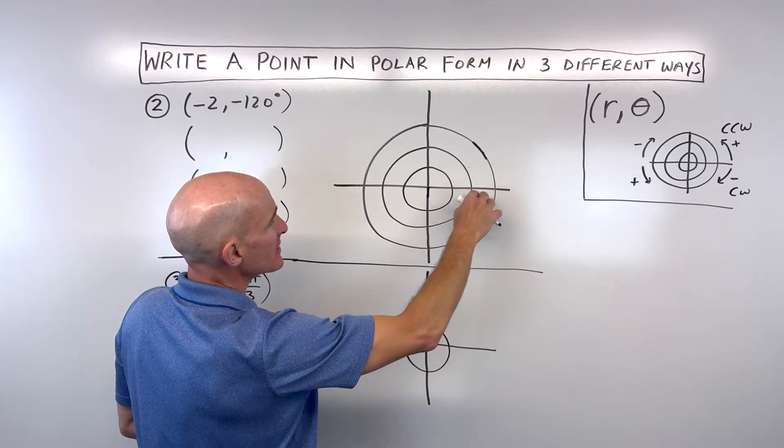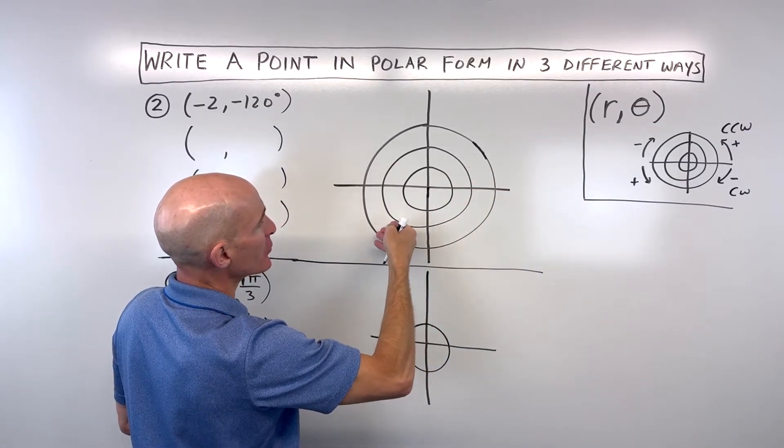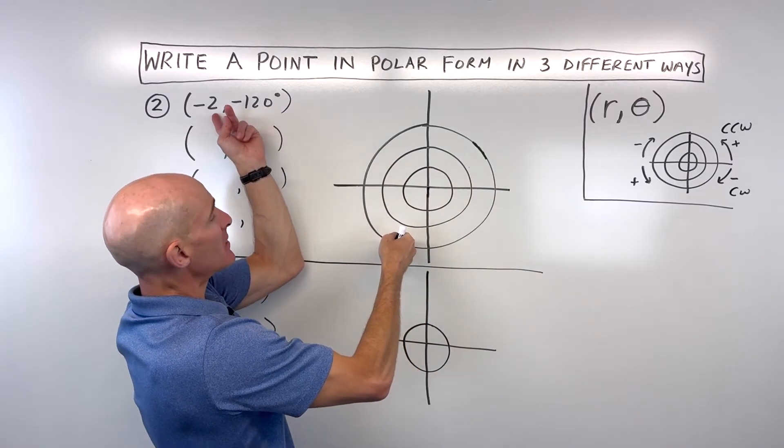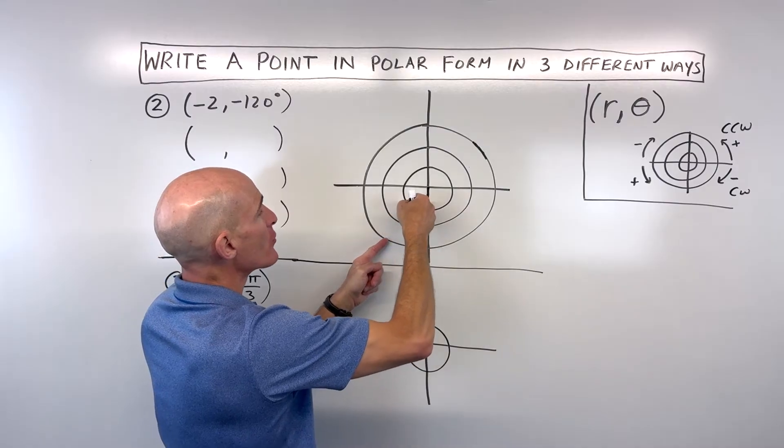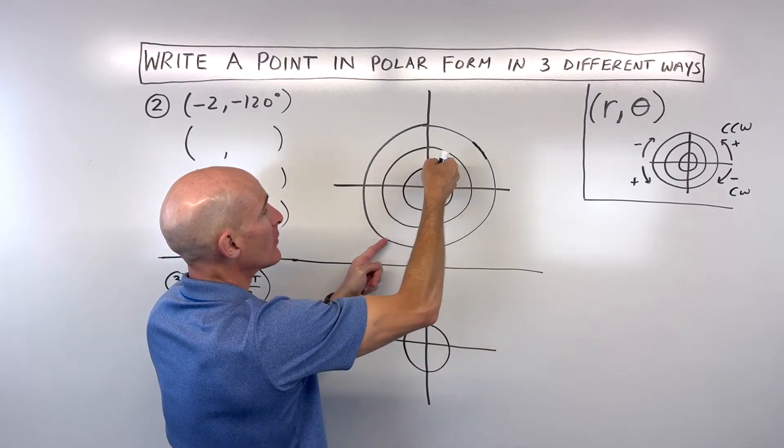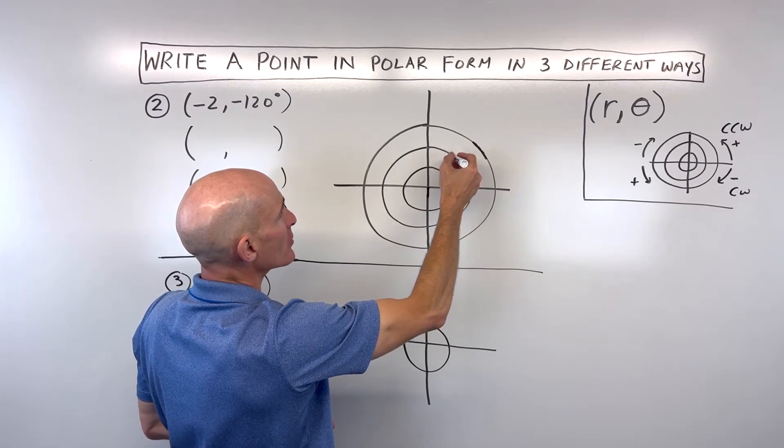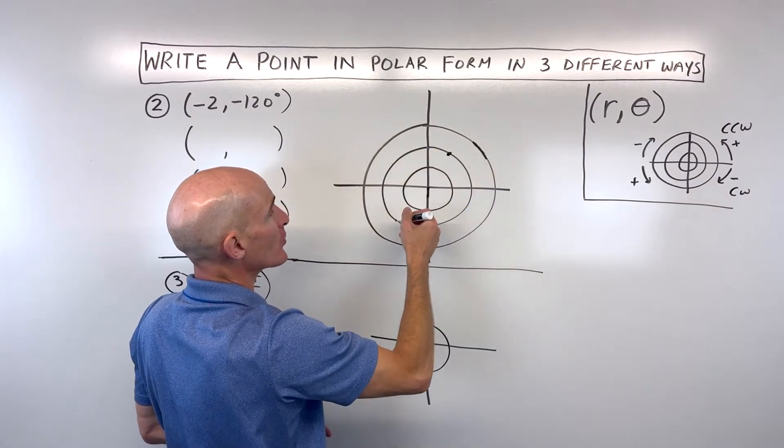Where's negative 120 degrees? Well, negatively go clockwise: 90 plus another 30, so that's somewhere over here. But when you have this negative r value, you can go through the pole to the other side. That's where your point would be located on a circle with radius two.